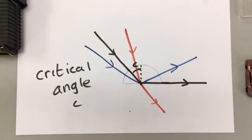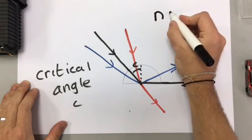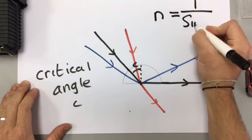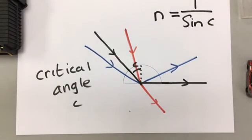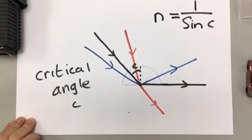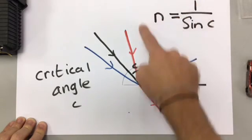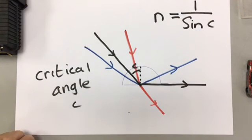The critical angle can be found using the refractive index. It has a similar equation, but with an important difference. The refractive index is 1 divided by the sine of the critical angle. That equation is similar to the refractive index equation we had before, but you're using the critical angle and you have 1 on top instead of the angle of incidence. If you're finding the critical angle, use this equation. If you're talking about regular refraction, use the equation from earlier.